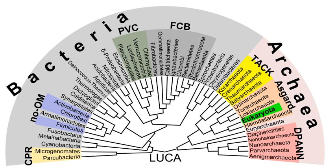Many archaea grow as plankton in the oceans. Symbiotic prokaryotes live in or on the bodies of other organisms, including humans. In 1977, Carl Woese proposed dividing prokaryotes into bacteria and archaea — originally eubacteria and archaebacteria — because of the major differences in structure and genetics between the two groups. Archaea were originally thought to be extremophiles living only in inhospitable conditions, but have since been found in all types of habitats. The resulting arrangement of eukaryota, bacteria, and archaea is called the three-domain system, replacing the traditional two-empire system.